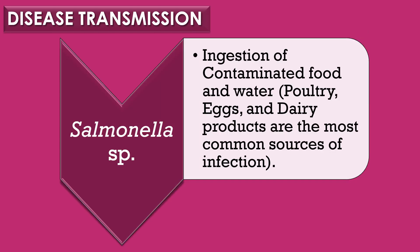Regarding disease transmission of Salmonella species, Salmonella infections are mainly transmitted by ingestion of contaminated food and water. The major foods responsible for spreading Salmonella infections include poultry, eggs, and dairy products — these are the most common sources of Salmonella infection.